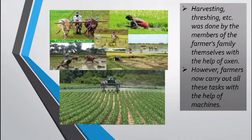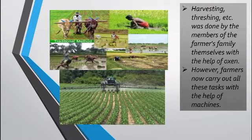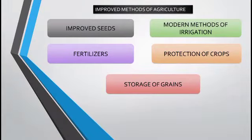However, farmers now carry out all these tasks with the help of machines, and the work has become easier. With machines, different activities on the farm are carried out and the farmer's work has become a little easier. Now improved methods of agriculture are followed in our country. Certain points are taken into consideration: improved seeds, fertilizers, modern methods of irrigation, planting crops and giving them a proper amount of water, protection of crops, and storage of grains.